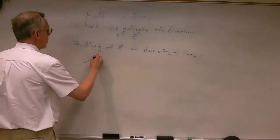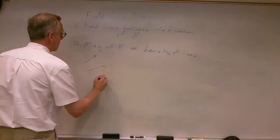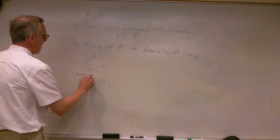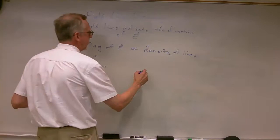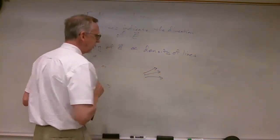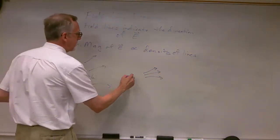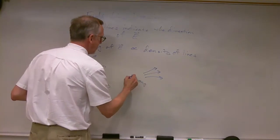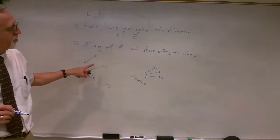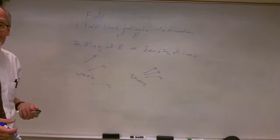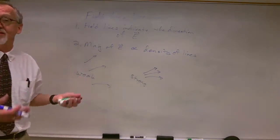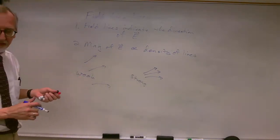The second point is that the magnitude of the electric field is proportional to — and I'm using this proportionality symbol — the density of lines. So if we've got a region where the lines are relatively far apart, this means we've got a weak field. If we've got a region where the lines are relatively close together, this means we have a strong field. The spacing between the lines gives us an idea of the strength of the field.